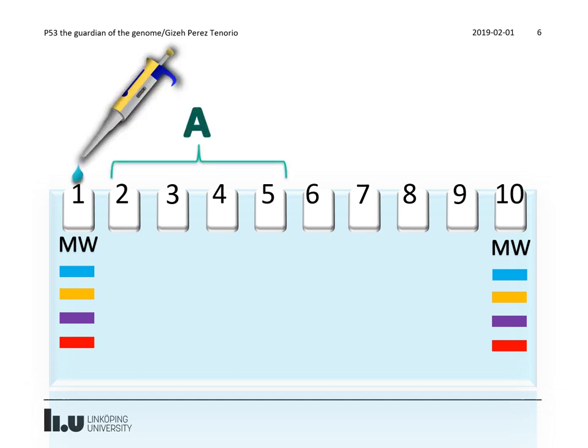It is important to keep your cell lines together. So in lanes 2 to 5 you can load cell line A, and in lanes 6 through 9 you can load cell line B.